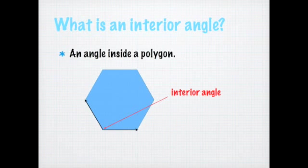What is an interior angle? It's just an angle inside a polygon. Interior just means inside. And then the hexagon here, you have one of the interior angles labeled. This hexagon has six sides, so it also has six angles — six interior angles — and it will also have six exterior angles.